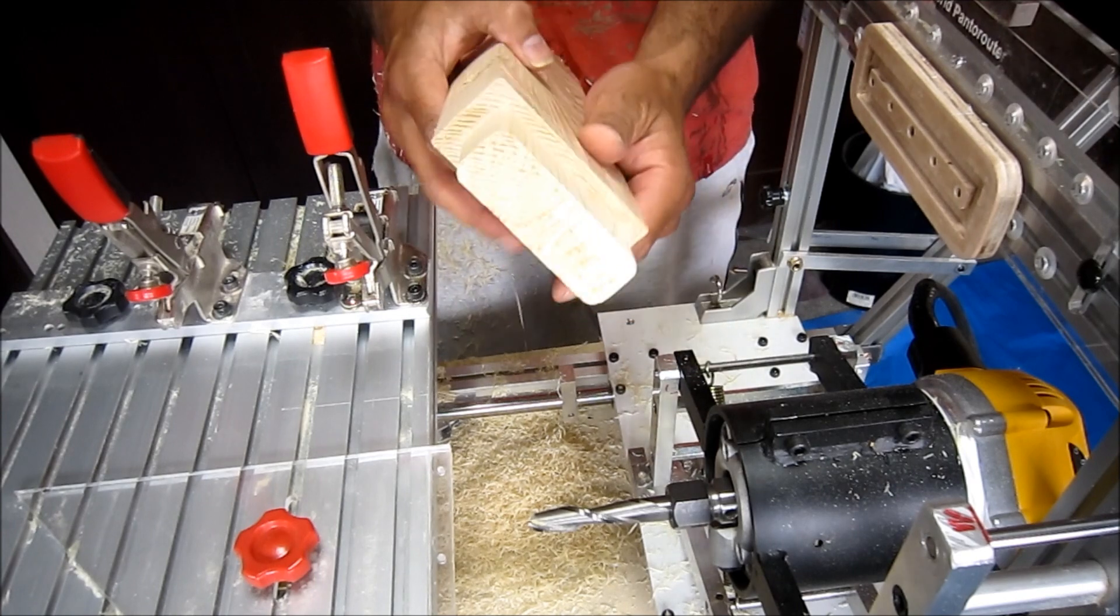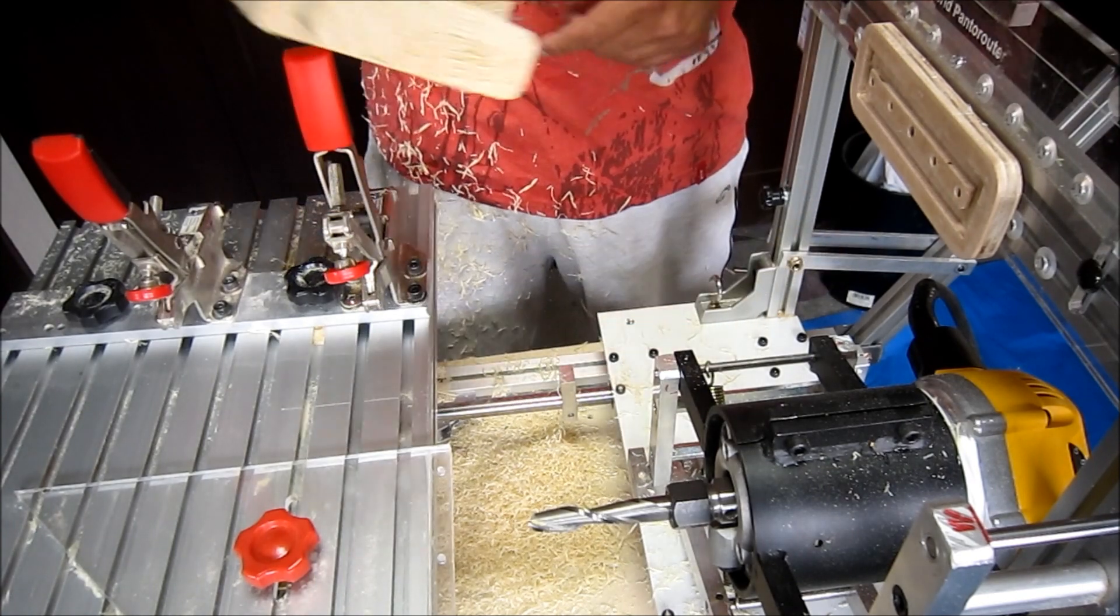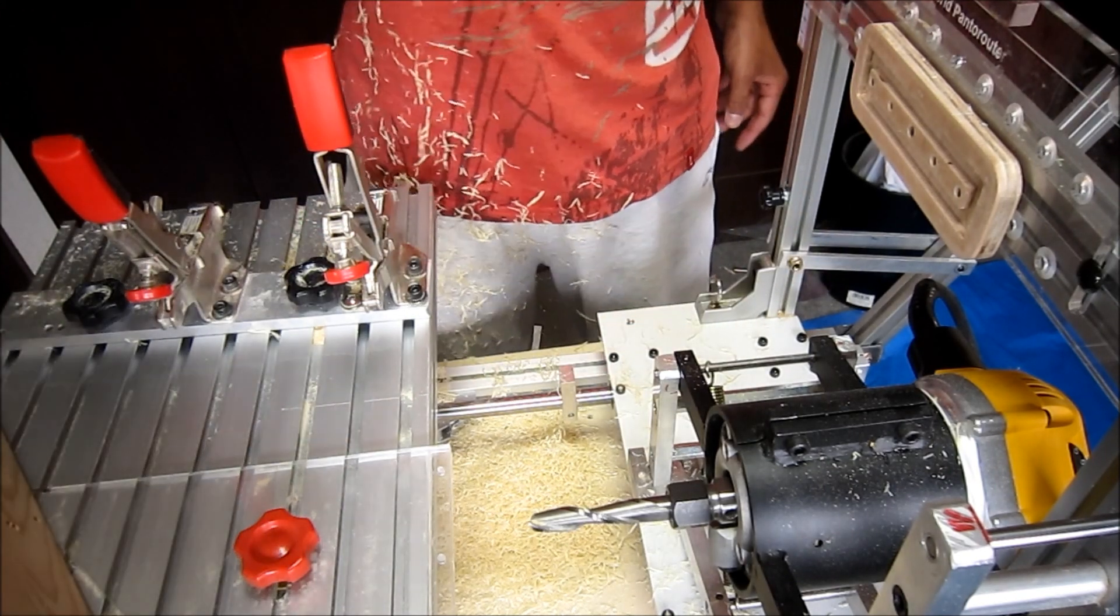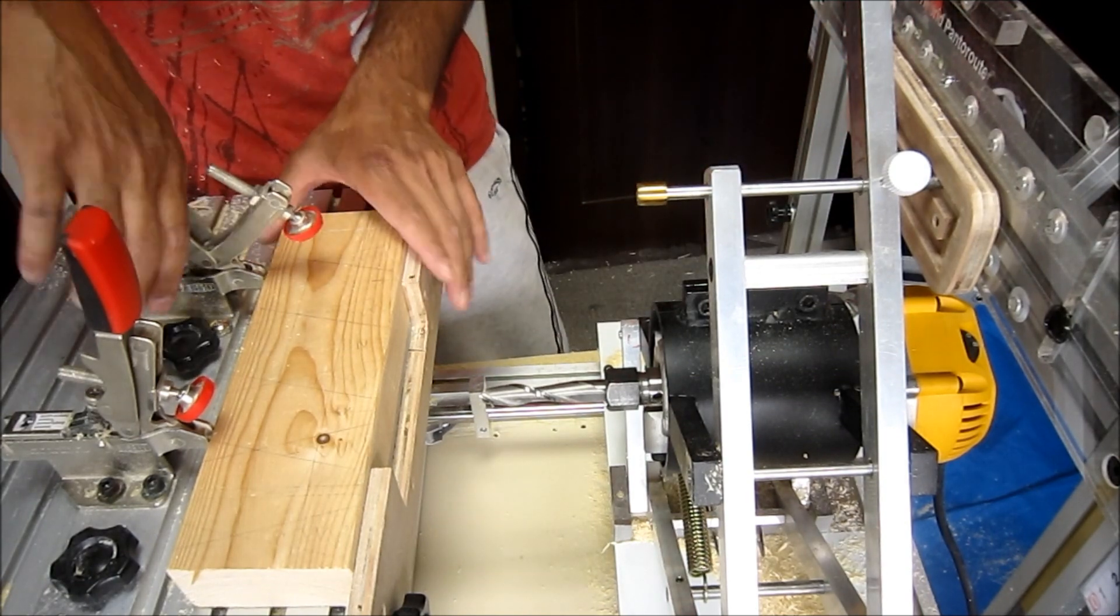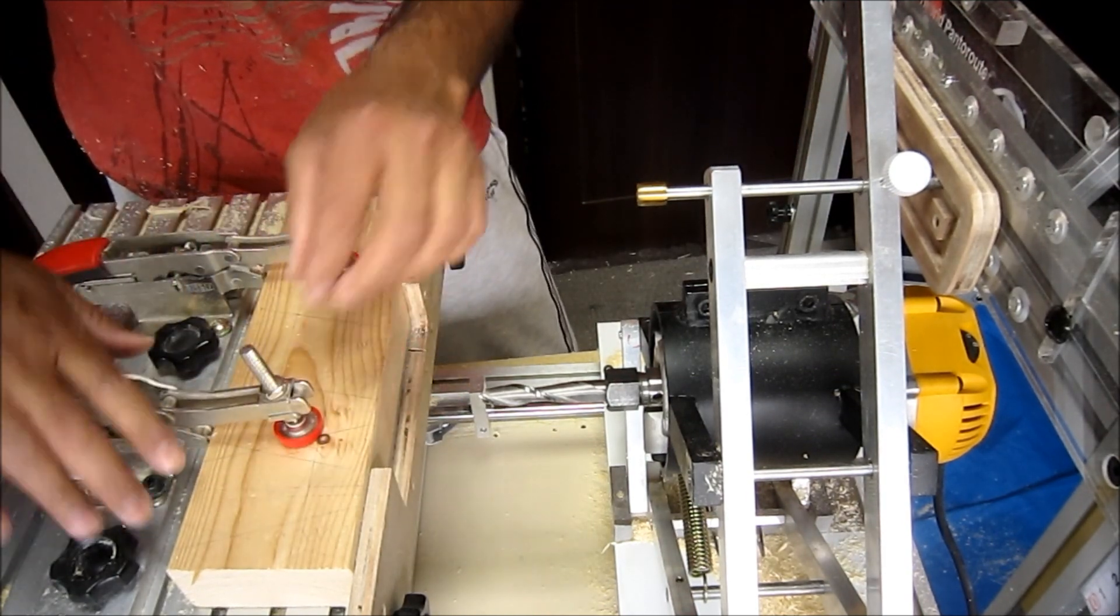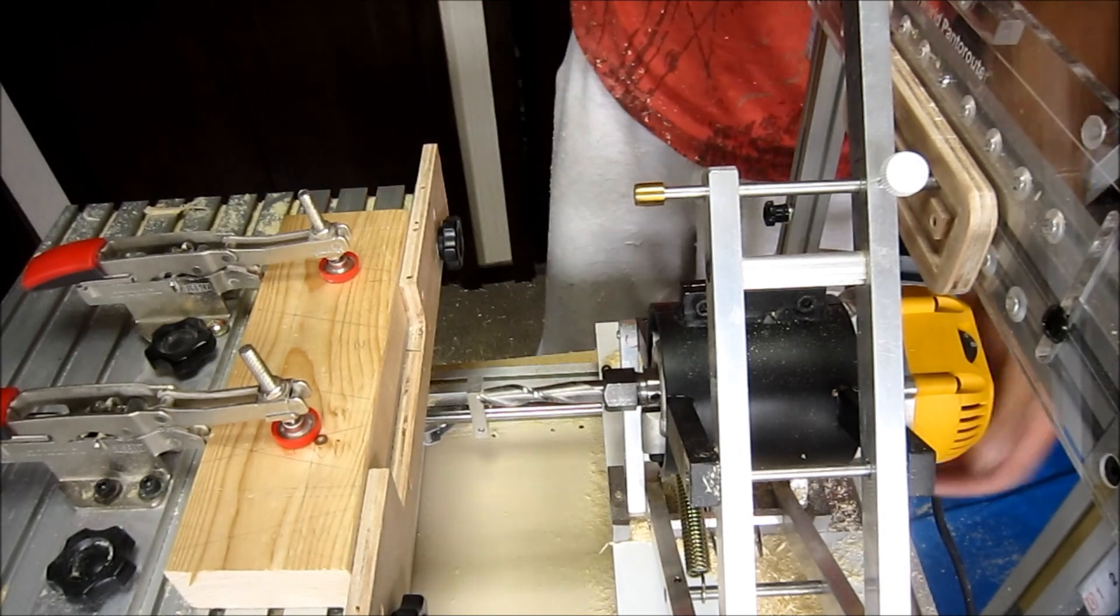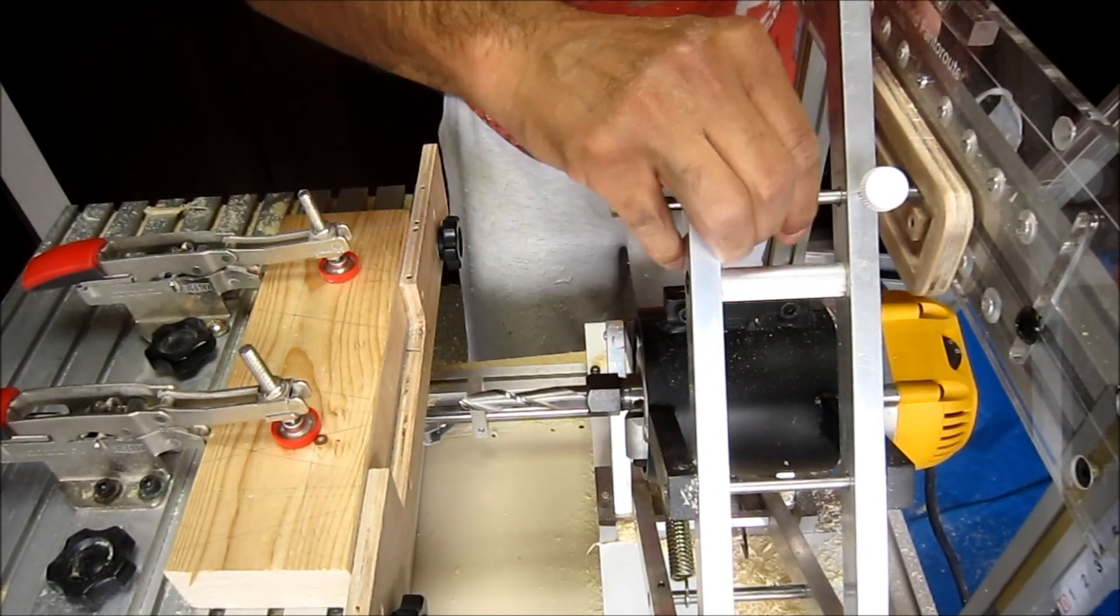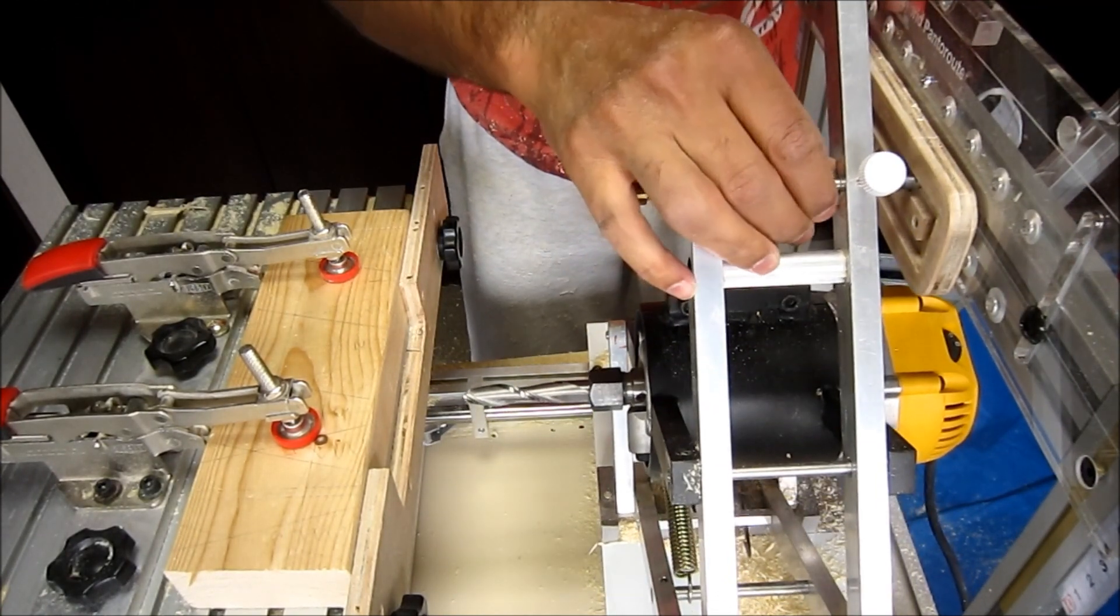So our tenon is ready. Now let's make the mortise. Just clamp like this and then put your guide shaft inside this groove.